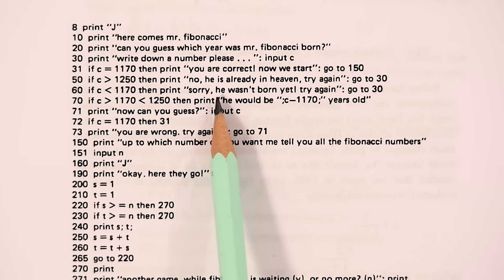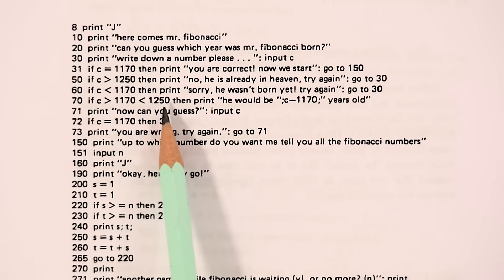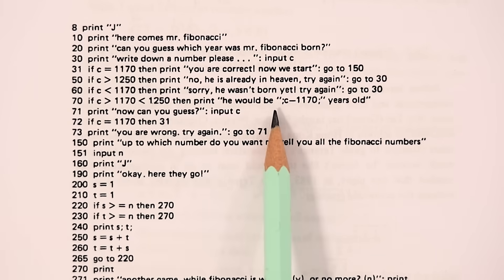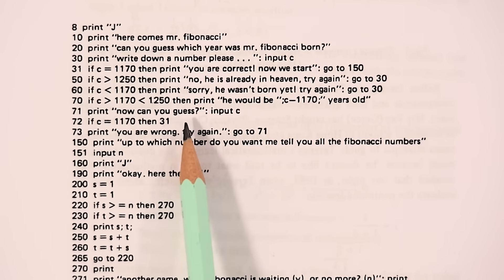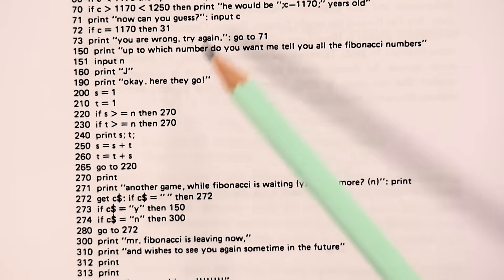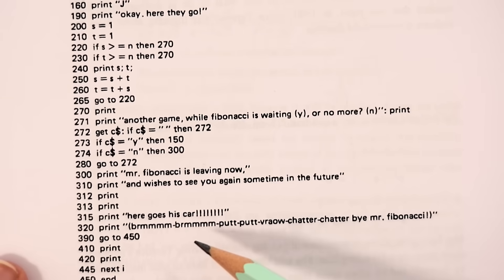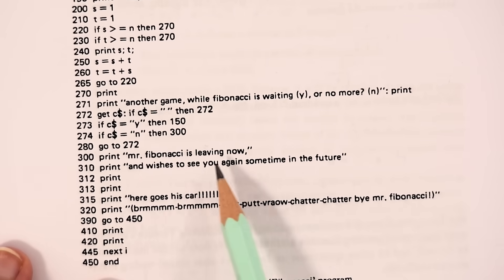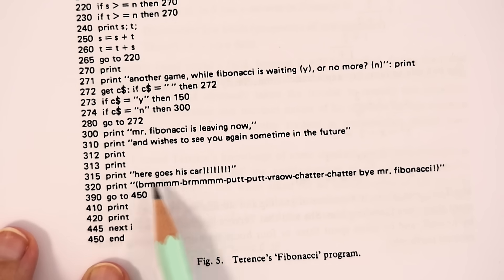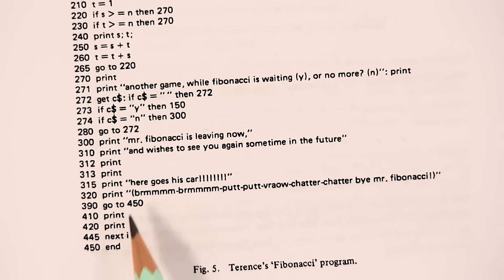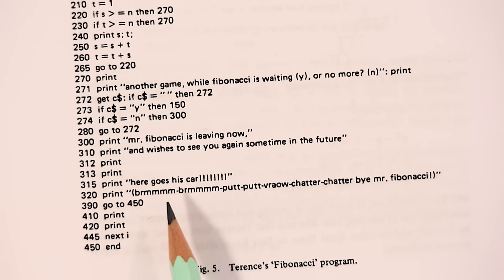Or they might be told, sorry, he wasn't born yet. Try again. Then if they were close, it would print the difference between the guess and the actual answer. Meaning that even to start this program, the user is guided by a bit of mathematics. After printing some of the sequence, it ends with Mr. Fibonacci is leaving now, and here goes his car. This line is perhaps the only reminder of just how young the author of this program is.